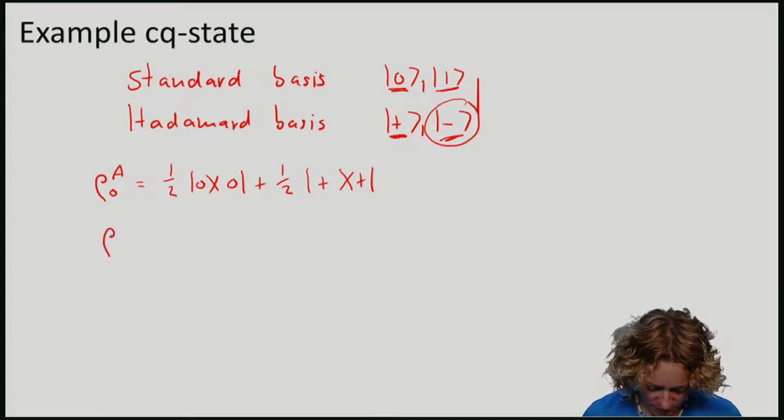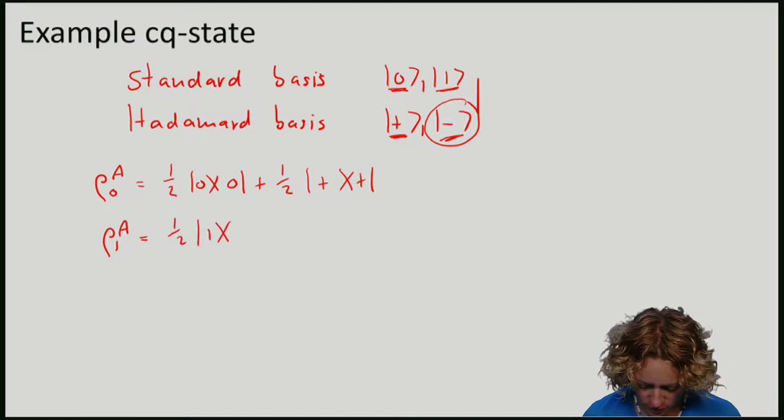This gives me another density matrix which I'll call ρ¹, which is half times |1⟩⟨1| plus half times |-⟩⟨-|.